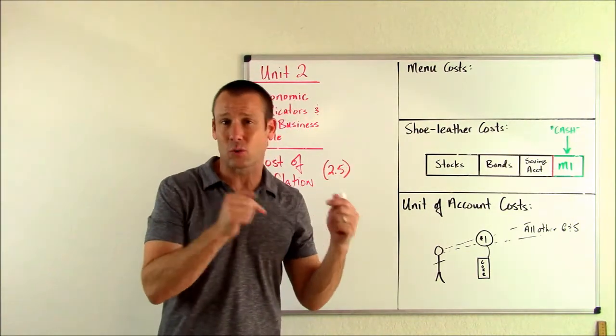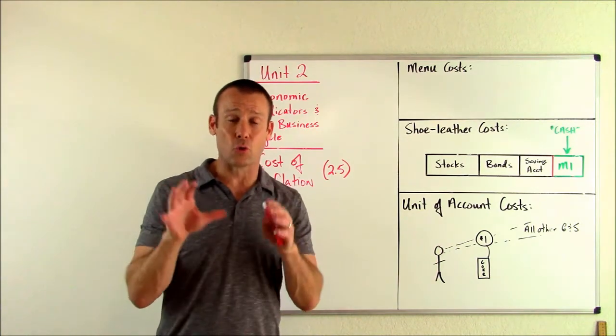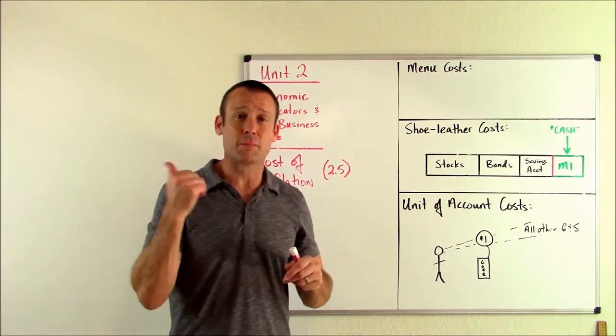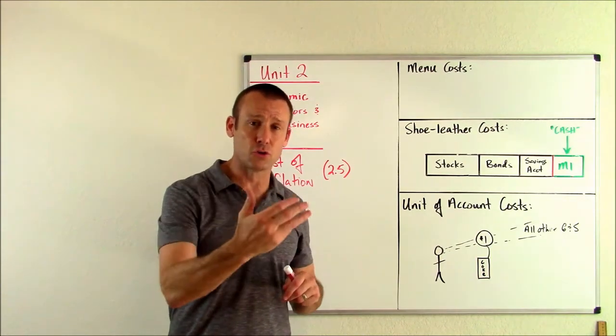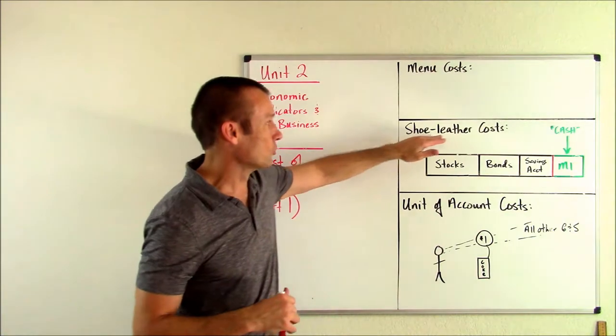And those limited resources could have made things of value. They could have made goods and services instead. So this is a cost of inflation because we're using resources to do this thing simply because of inflation. Next, shoe leather costs.